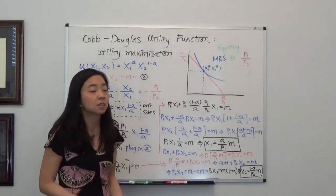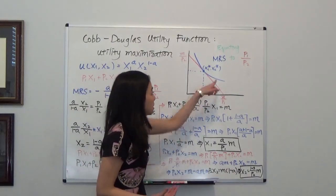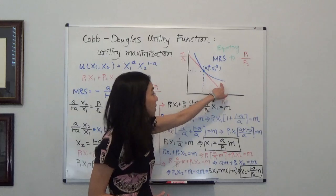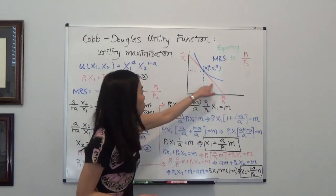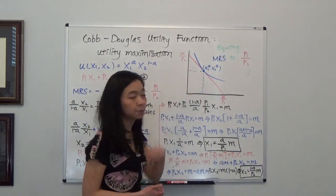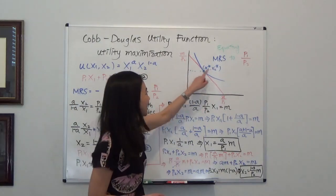So our goal is this. We are going to equate the marginal rate of substitution to the slope of our budget line. Therefore, we'll be able to find this optimal consumption bundle x1 and x2 star.